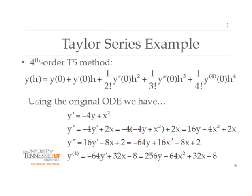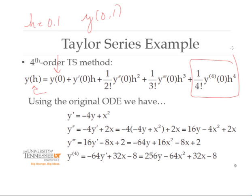The fourth-order Taylor series method to achieve this integration starts from the initial condition at x equals 0 and estimates the solution at the new value using H equals 0.1. The Taylor series expansion includes all derivatives up to the fourth — if it were a second-order method, it would only go up to the second derivative term. That's the meaning of 'order' in the context of a Taylor series method.